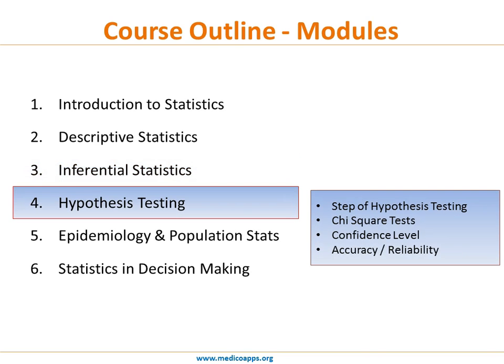The fourth module covers hypothesis testing, which is a large part of biostatistics — for example, testing whether one drug is better than another, or whether one group of patients has better outcomes than another. We will look at the various steps of hypothesis testing, chi-square tests, confidence levels, and the accuracy and reliability of various hypothesis tests.